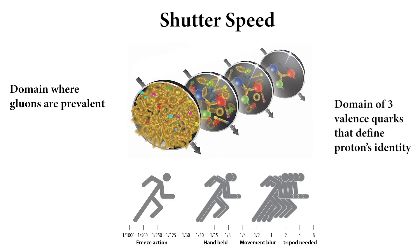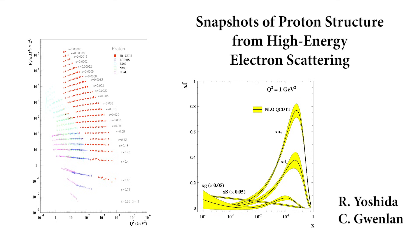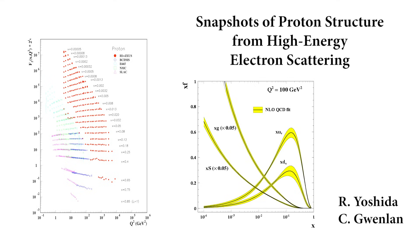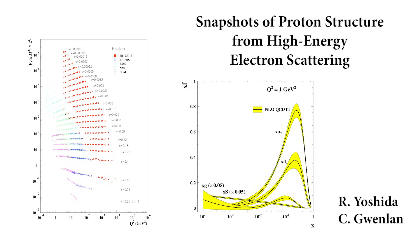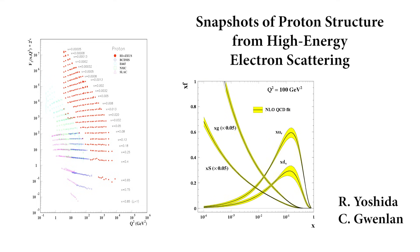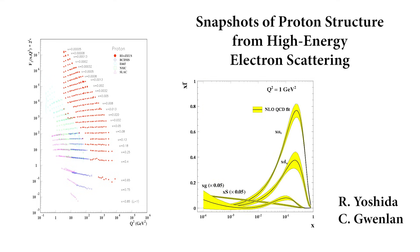The shutter of a camera is a door that opens for a definite time to allow selected light to reach the medium. This time can, for our accelerator, also be determined from the electron and the proton, and can be equated with the value of Bjorken X. X can be interpreted as the fraction of momentum of the proton that is carried by the struck quark.